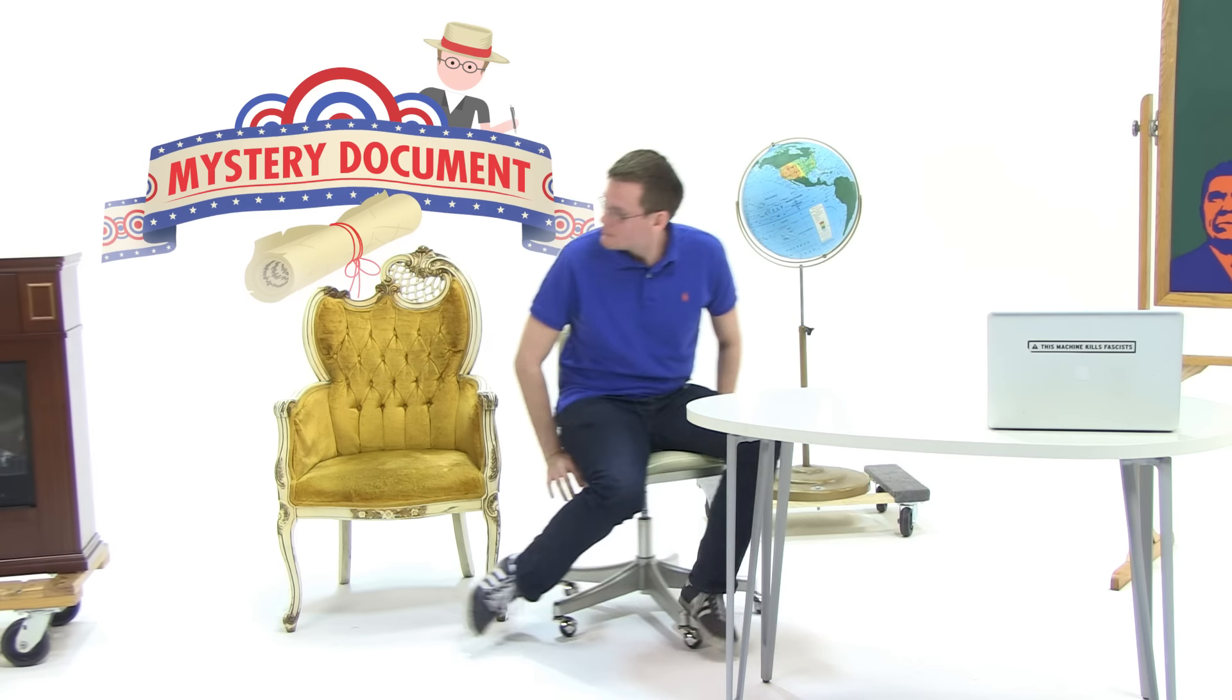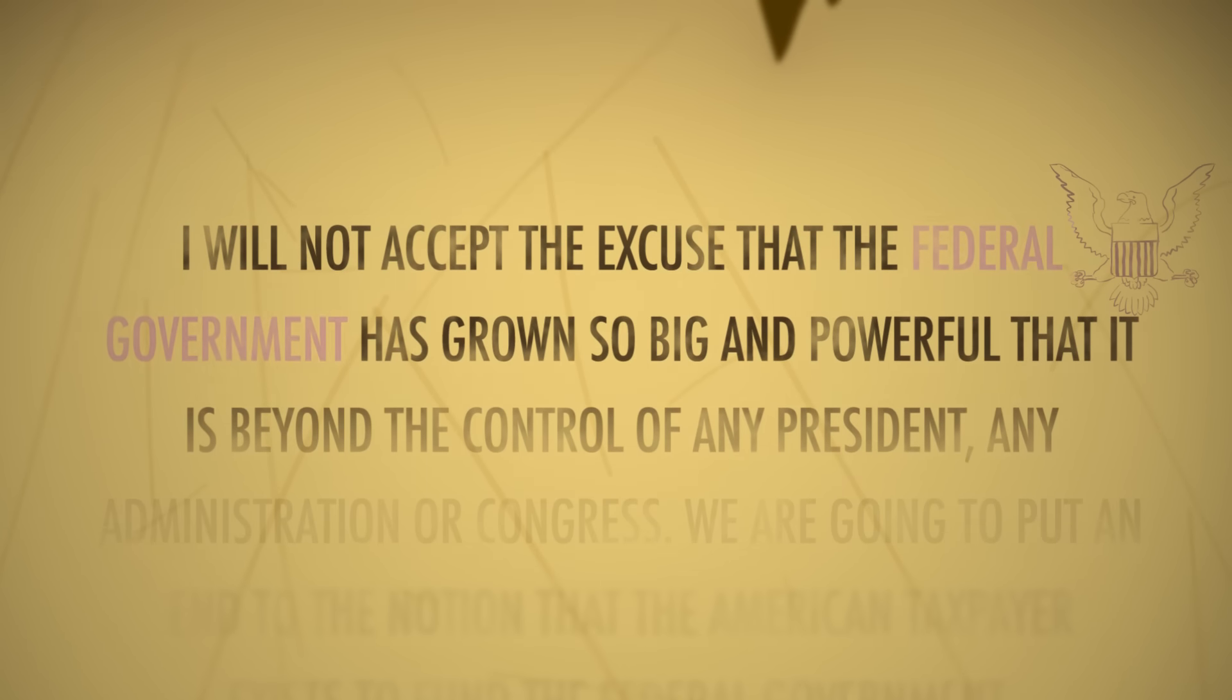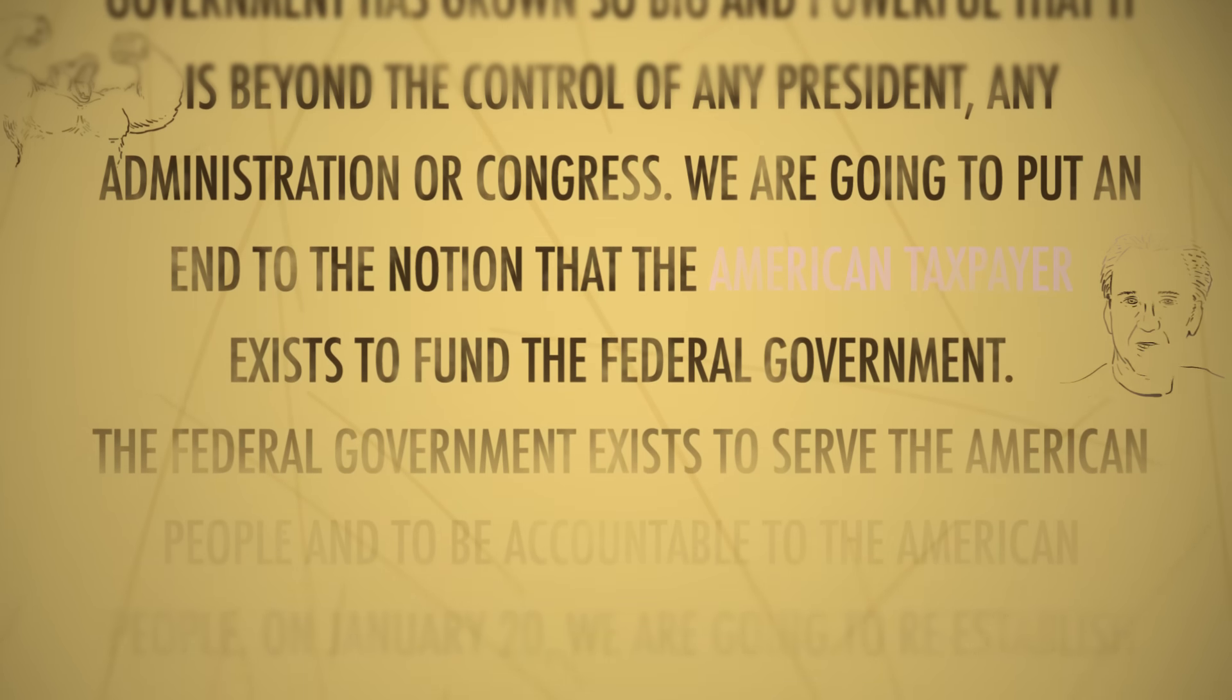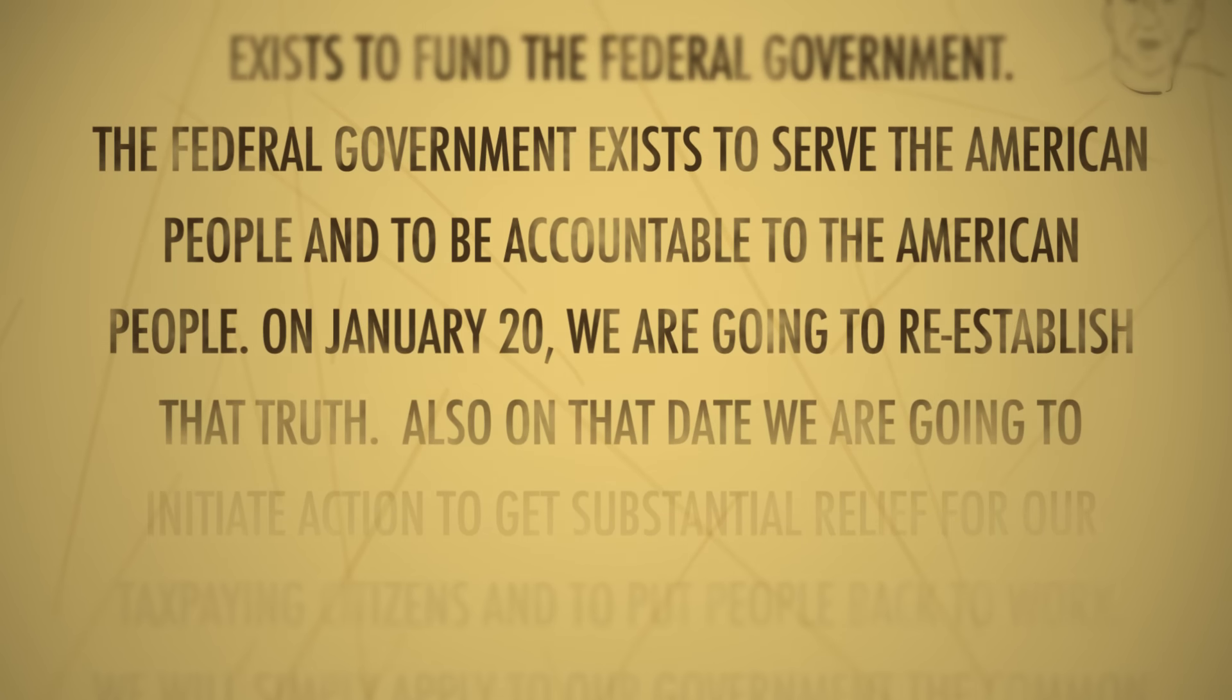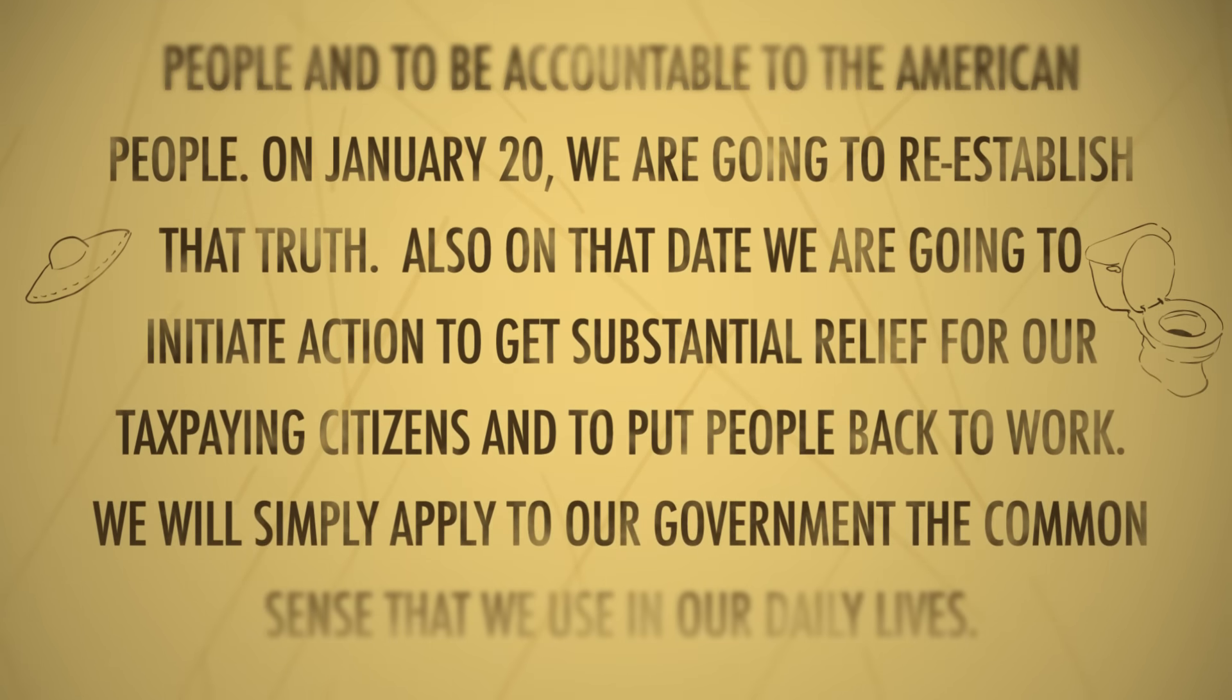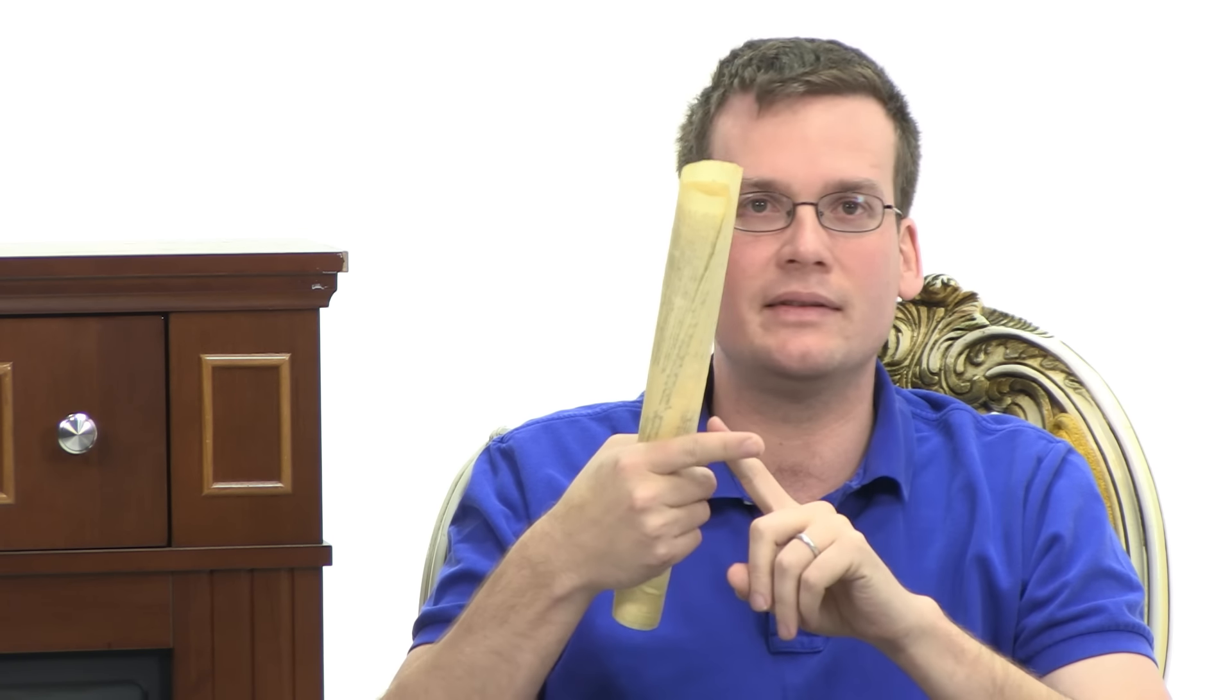Y'all, time for the mystery document? The rules here are simple. I read the mystery document, I either get the author of it correct or I get shocked. All right, here we go. Can I just take a preliminary guess that it's going to be Reagan? I will not accept the excuse that the federal government has grown so big and powerful that it is beyond the control of any president, any administration, or congress. We are going to put an end to the notion that the American taxpayer exists to fund the federal government. The federal government exists to serve the American people and to be accountable to the American people. On January 20th, we are going to reestablish that truth. Also on that date, we are going to initiate action to get substantial relief for our taxpaying citizens and to put people back to work. We will simply apply to our government the common sense that we use in our daily lives. It is Reagan! Stan is telling me that I'm not going to get the check mark unless I guess the correct speech. Well, he talks about January 20th, so obviously it's not his inaugural address. It's either the acceptance speech he gave at the convention or the speech that he gave after he was elected, but I don't think... convention? Yes!